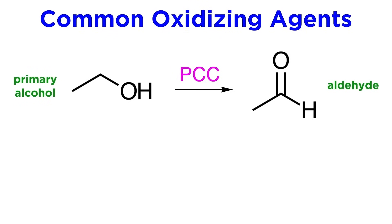One of the easiest ways to produce aldehydes is through the oxidation of primary alcohols. This can be done with reagents like PCC, and we simply gain an additional carbon-oxygen bond, resulting in an aldehyde.